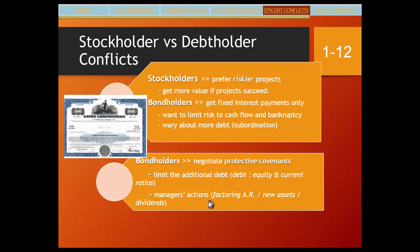Bondholders may also restrict managerial actions affecting corporate assets — for example, prohibiting the corporation from factoring its accounts receivable, because bondholders may want to claim those receivables in the event of a default to recover interest payments. The same applies to new plant, property, and equipment acquisitions if they entail borrowing new debt. Thirdly, to assure enough cash for interest payments, bondholders may restrict the amount of dividends the corporation can pay — specifically, dividends cannot be paid until all bondholders receive their interest. In summary, stockholders like risk to get more income, while bondholders are conservative to ensure their fixed interest payments.